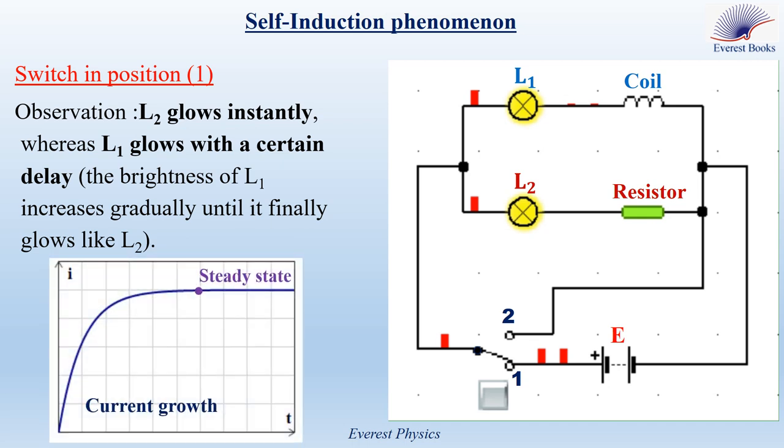This graph shows the growth of the current in the coil. It shows that the current starts at zero and increases to become maximum at a state called the steady state.